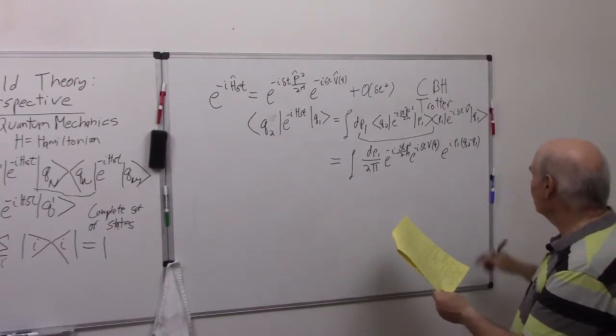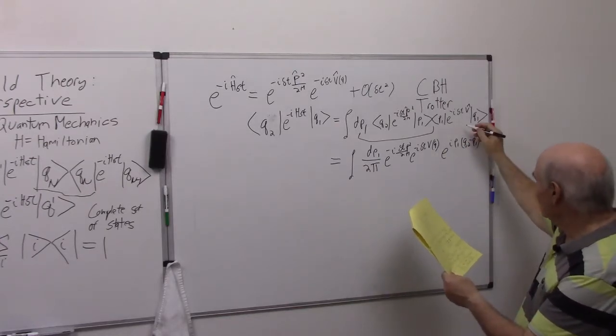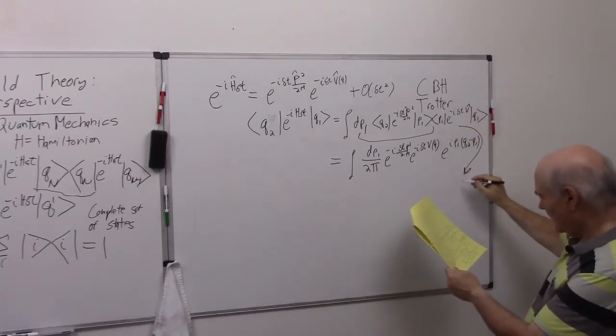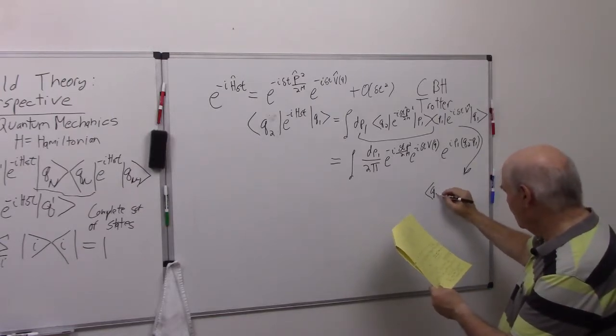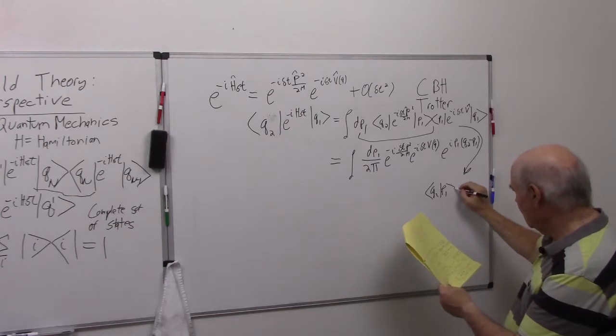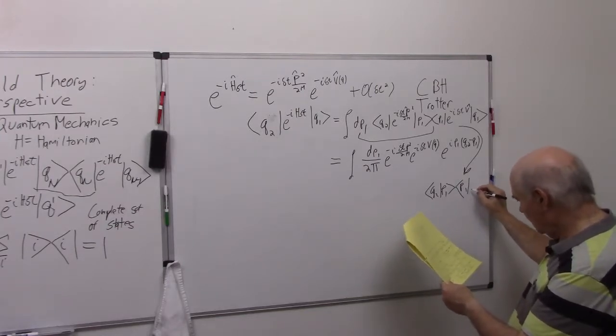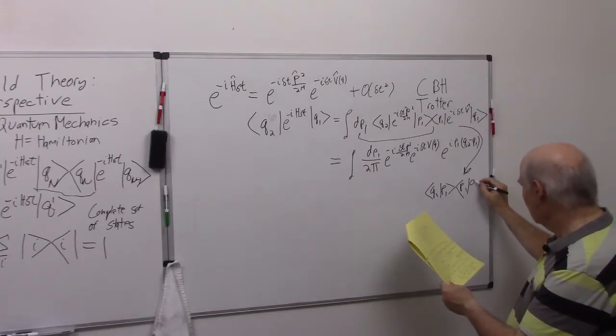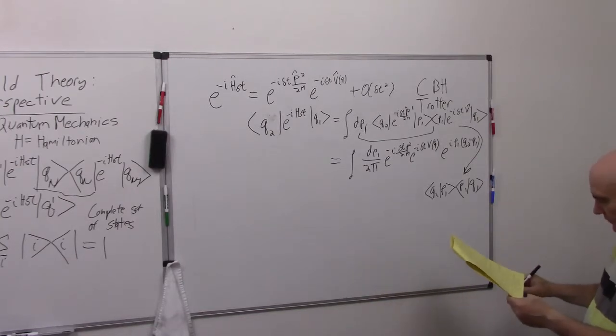Well I skipped a step, okay. The step I skipped is I really get q2, p1, and p1, q1. Now if you remember your quantum mechanics, you have x, p.